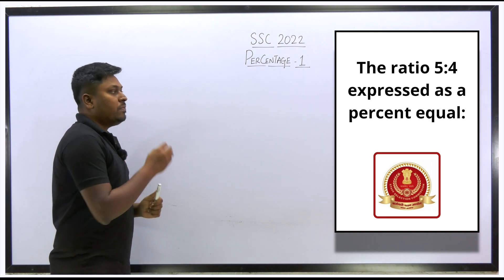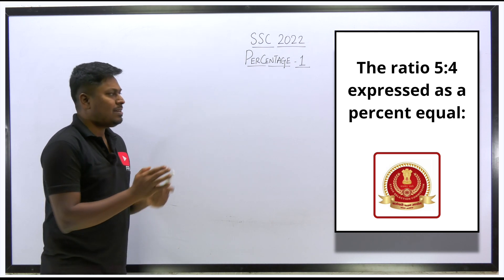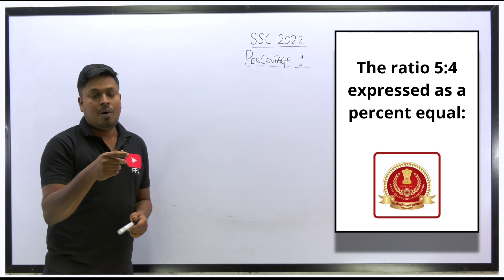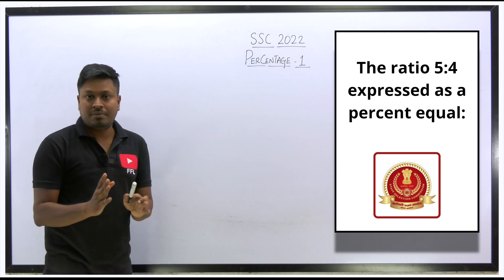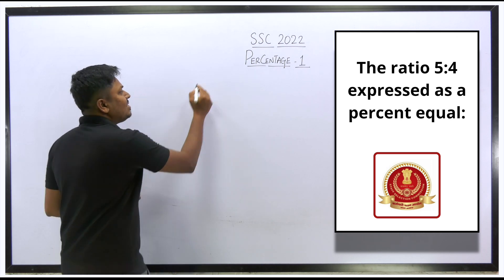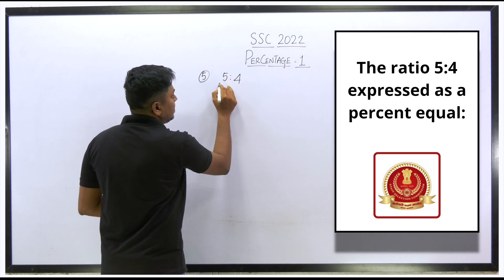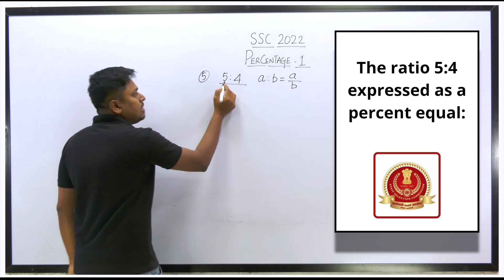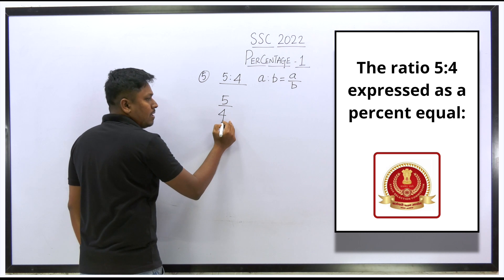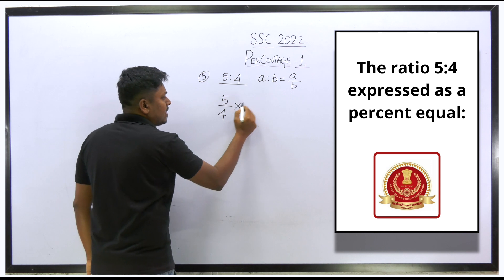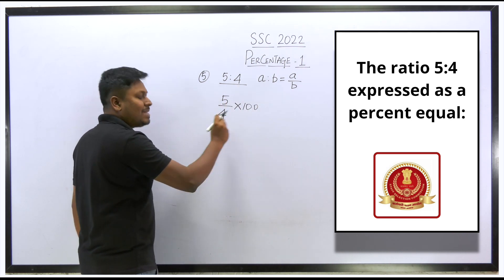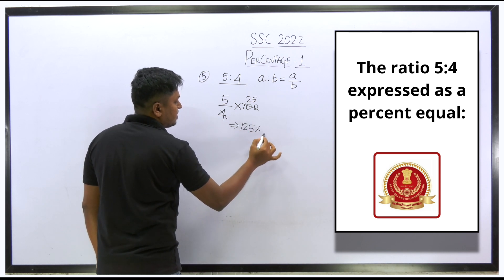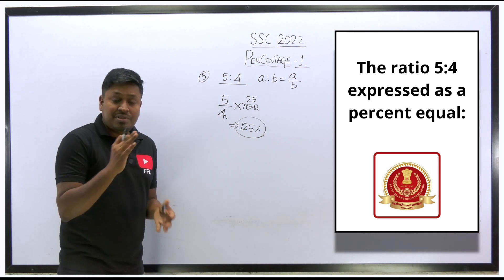Question number five: the ratio 5:4 expressed as a percentage equals what? Whenever converting a ratio to percentage, multiply by 100. 5:4 = 5/4, and (5/4) × 100 = 125%. So 5:4 expressed as a percentage equals 125%.